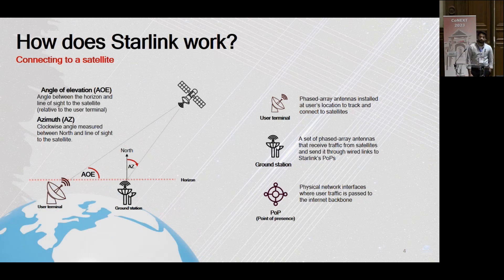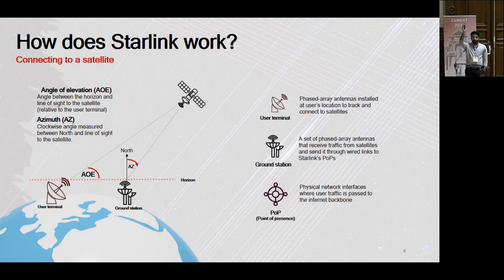Now I'll talk about some positional parameters which are quite important in identifying where a satellite is in orbit. The first one is called the angle of elevation — simply the angle between the horizon and the line of sight to the satellite. So it tells me how high up in the sky the satellite is, but it doesn't tell me anything about the direction. For direction, we use something called azimuth, which measures the clockwise angle between north and the line of sight to the satellite itself. Using these two parameters together, I can figure out exactly where in orbit a satellite is.